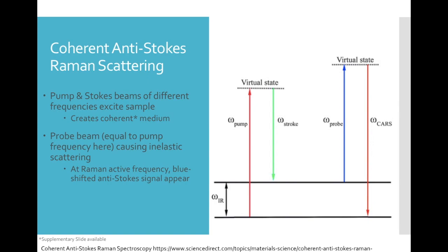CARS, which is coherent anti-Stokes Raman scattering, works with three beams of different frequencies: the pump, the Stokes, and the probe beams. In this experiment, the pump and the probe beam were actually the same frequency and only the Stokes was different. The pump and Stokes beams come together and hit the same sample, creating a coherent medium, and then the probe beam comes in and causes inelastic scattering, which gives the anti-Stokes Raman spectra that we analyze.